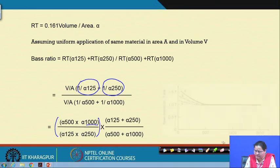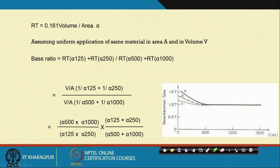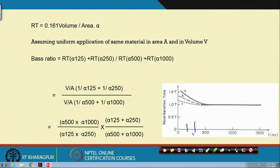Looking at the graph, you see the reverberation time calculated as per NRC, and we are desiring a bass ratio of 1.1 up to 1.45 for warmth, so that we can get a feeling of warmth during musical performances. We are desiring a higher RT value of 1.5 T when the frequency is at 125 or 250 Hz. So we desire a higher alpha value there in order to actually get a higher reverberation time in that particular frequency zone, but it should be within the range.